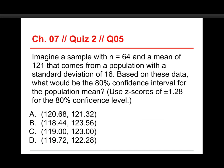All right, last one in quiz two. Imagine a sample of N equals 64, so 64 people, and a mean of 121 that comes from a population with a standard deviation of 16. Based on these data, what would be the 80% confidence interval for the population mean? And for an 80% confidence interval with z-scores, you use 1.28 plus or minus as the z-score. And the choices are here, 120.68 to 121.32, and so on. The answer to this one is B. It's 118.44 to 123.56. It's actually the widest of these choices here. Let's take a look at how you get these numbers.